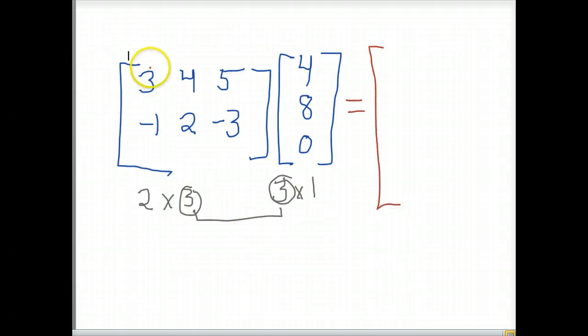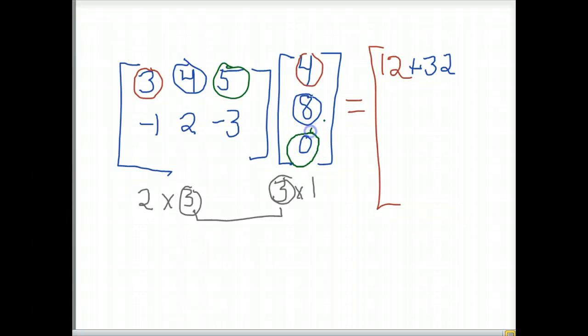To do the first multiplication, we are going to take the first row of the matrix and the first value of the vector and multiply them. We will then add to that the second value of the matrix in the first row times the second entry in the vector. And we will finish up by multiplying the last entry in the first row times the last element of the vector.